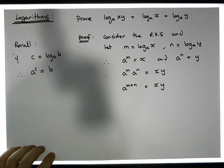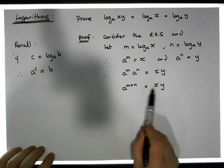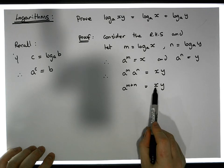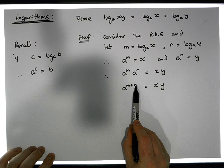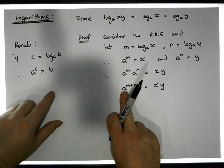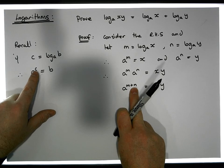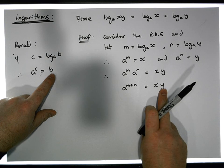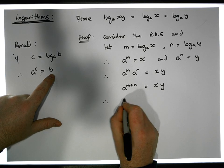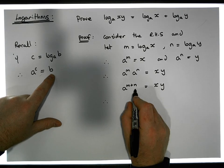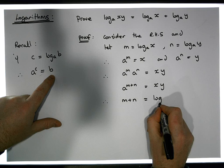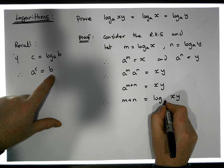Now, what does this tell us? We have xy equal to the base a raised to the power m plus n. This is exactly the definition of a logarithm — we have a base a, an exponent m plus n, and a value xy. So by the definition of logarithm, m plus n must equal the log of xy to the base a.